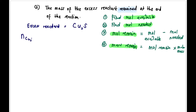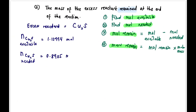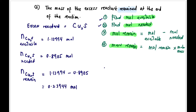Mole Cu₂S available = 1.2994 mol (calculated earlier). Mole Cu₂S needed = 0.8905 mol (calculated in part a). If you didn't calculate it earlier, find it from the balanced equation first. Mole remain = 1.2994 − 0.8905 = 0.40944 mol Cu₂S remaining.